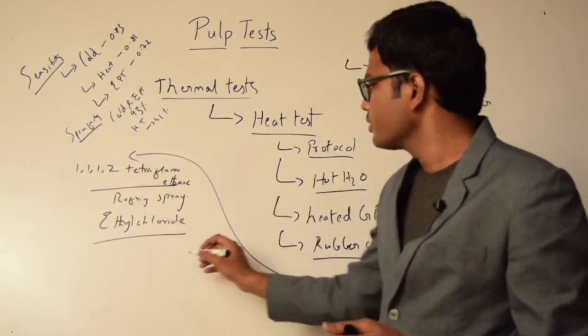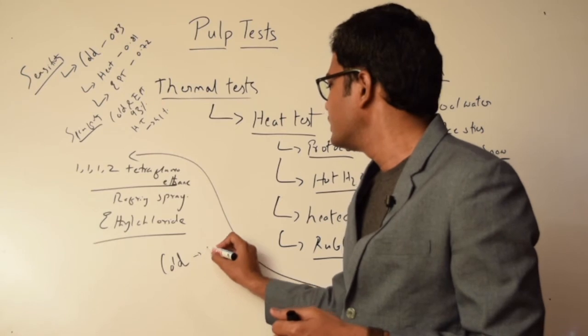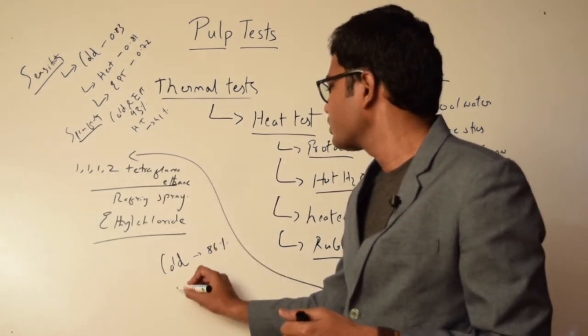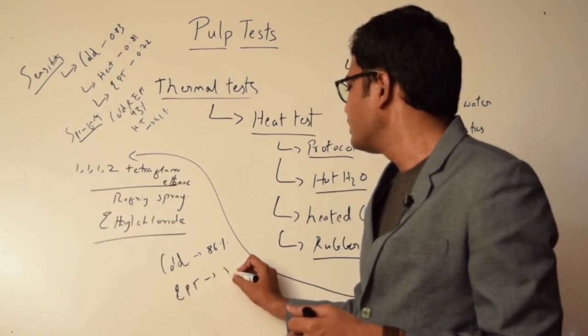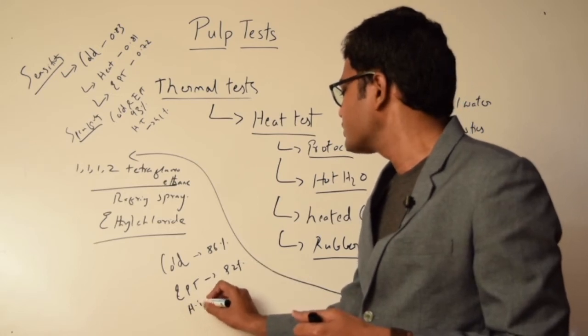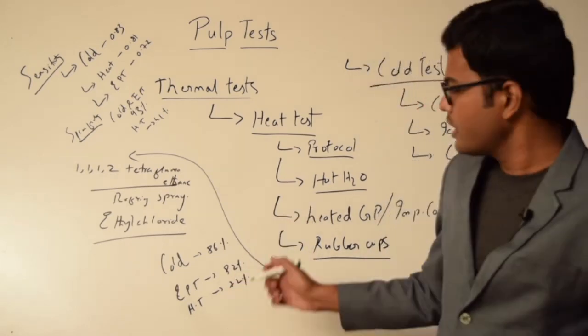They even compared the overall accuracy of all these materials and proved that cold test is 86% accurate, EPT is 82% accurate, and heat test is 72% accurate.